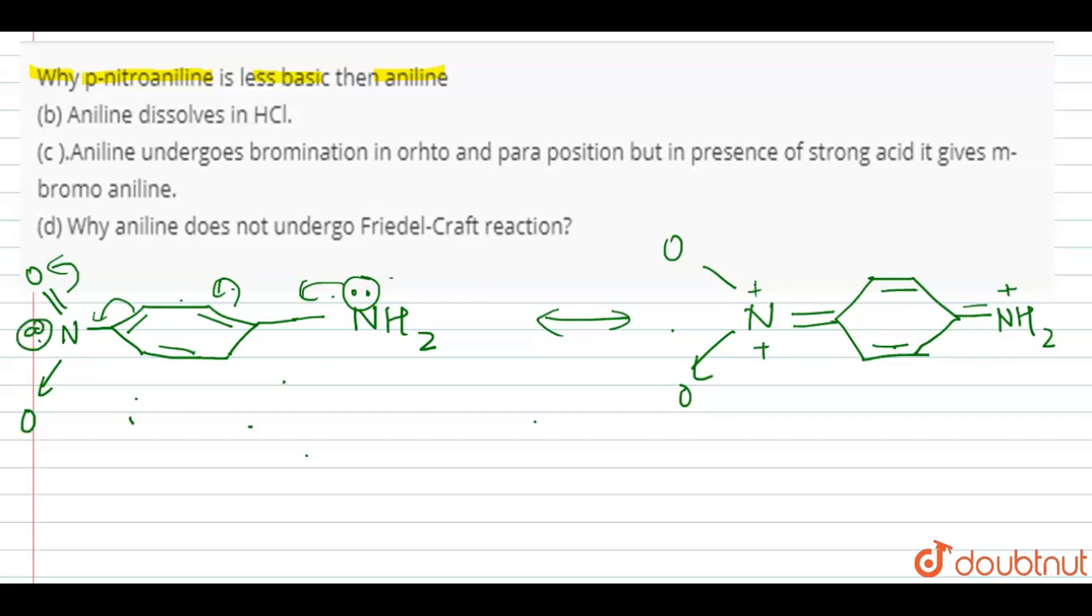In part B, it is asked: aniline undergoes bromination in ortho and para positions, but in presence of strong acid it gives meta-bromoaniline. We have to state the reason for this.